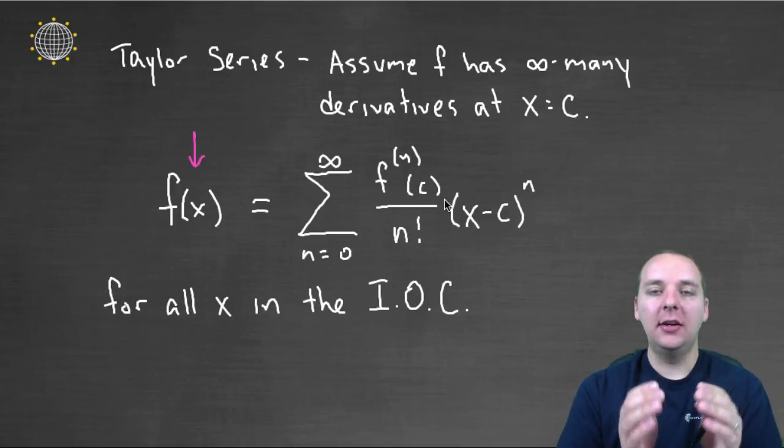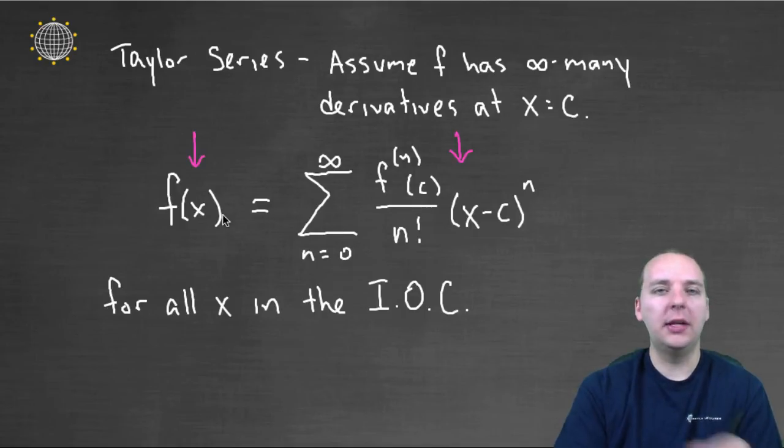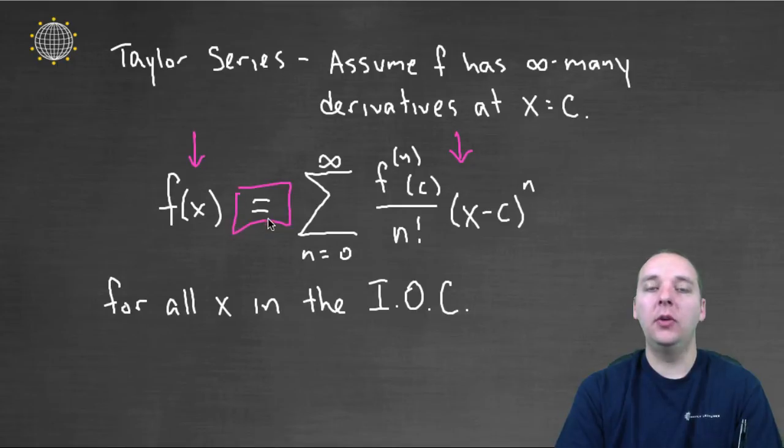if 10 is not in the interval of convergence, then that would mean that this series would diverge. But how can you have a diverging power series equal to a number? That just doesn't work. And so this match, this equality only holds when f is defined at x, and the power series is defined at x, meaning it's in your interval of convergence.